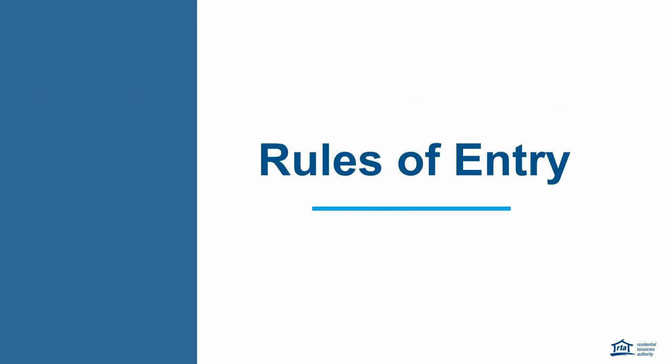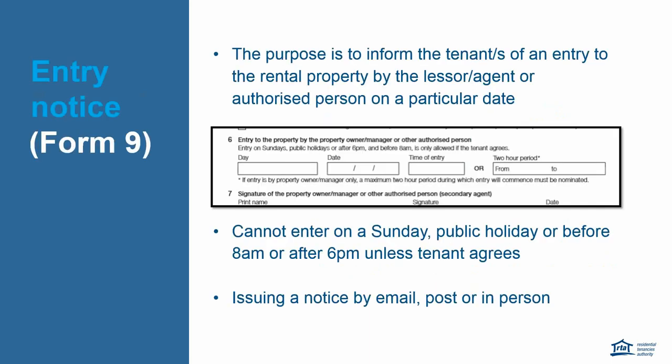The first part of today's webinar is going to be talking about the rules of entry. All our RTA forms can be downloaded or ordered on the RTA's website. The Form 9's purpose is to inform the tenant of the entry by the lessor, agent, or another authorised person. The form requires details of the person issuing the notice and the person or people who are entering — their name and contact phone number. Item 6 states the day, date, and time of entry.